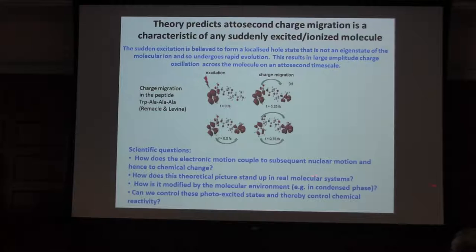How does the electronic motion couple to subsequent nuclear motion and therefore the chemical changes? How does this theoretical picture stand up in real molecular systems? I have in mind here the possibility of different complements in our sample that could actually make this a more complex picture. How is it modified by the molecular environment? What happens in the condensed phase? What happens if it's interacting with a solvent?